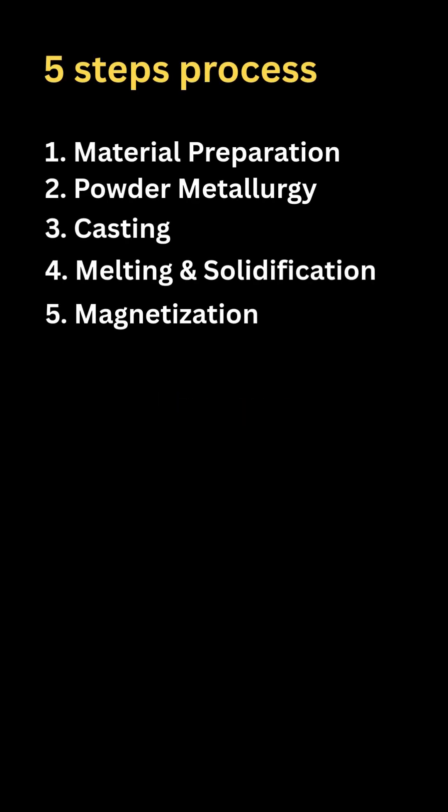Making a magnet is a five-step process: material preparation, powder metallurgy, casting, melting and solidification, and magnetization.